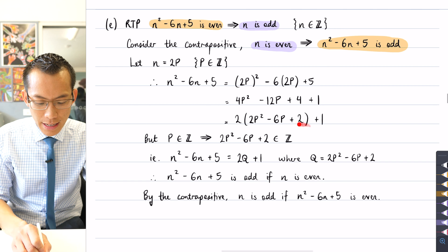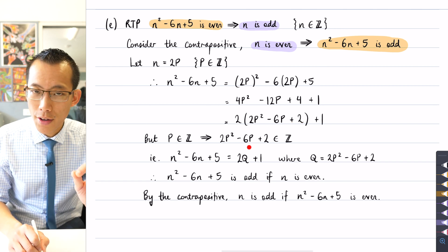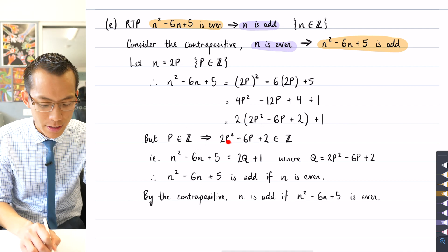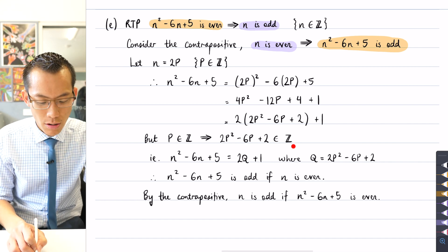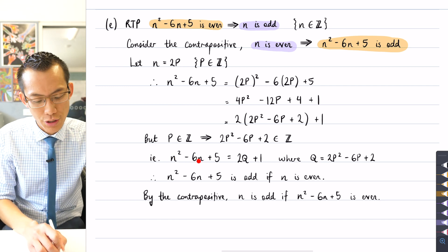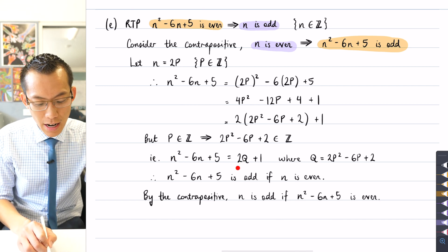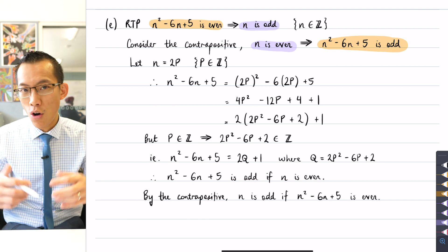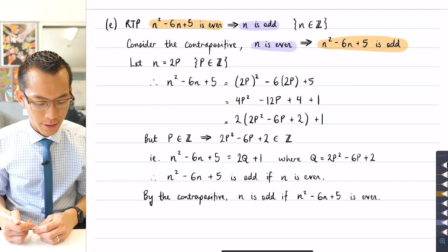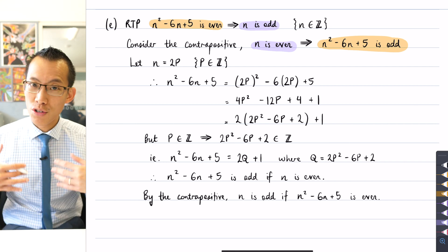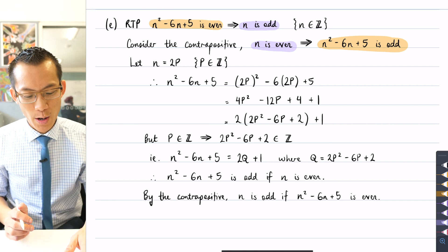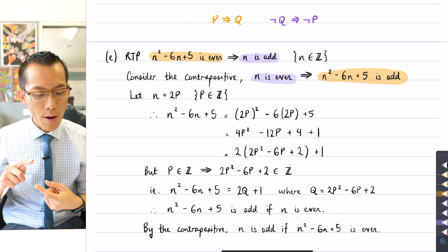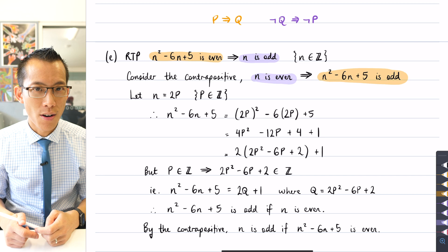But then what I notice is this guy here must also itself be a whole number. If p is a whole number, then squaring it, doubling it, subtracting, etc., you still end up with an integer. So therefore, you can see in this line I have firmly established n² - 6n + 5 is double an integer plus 1. This is the particular integer that's being doubled, so therefore it must be odd if I started with the assumption that n was even. So I've proved the contrapositive, which means that the original result, which is logically equivalent, is done. So that was the trickiest part of this question, I think. The algebra wasn't complicated, but you needed to know what the contrapositive was and what its logical relation to the original statement also was.